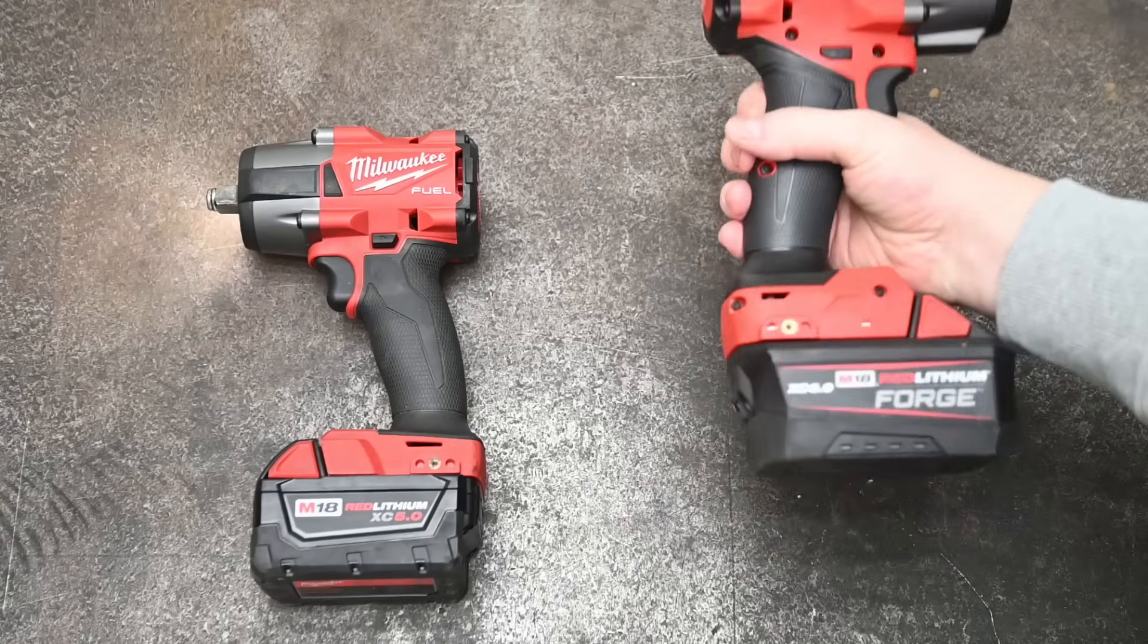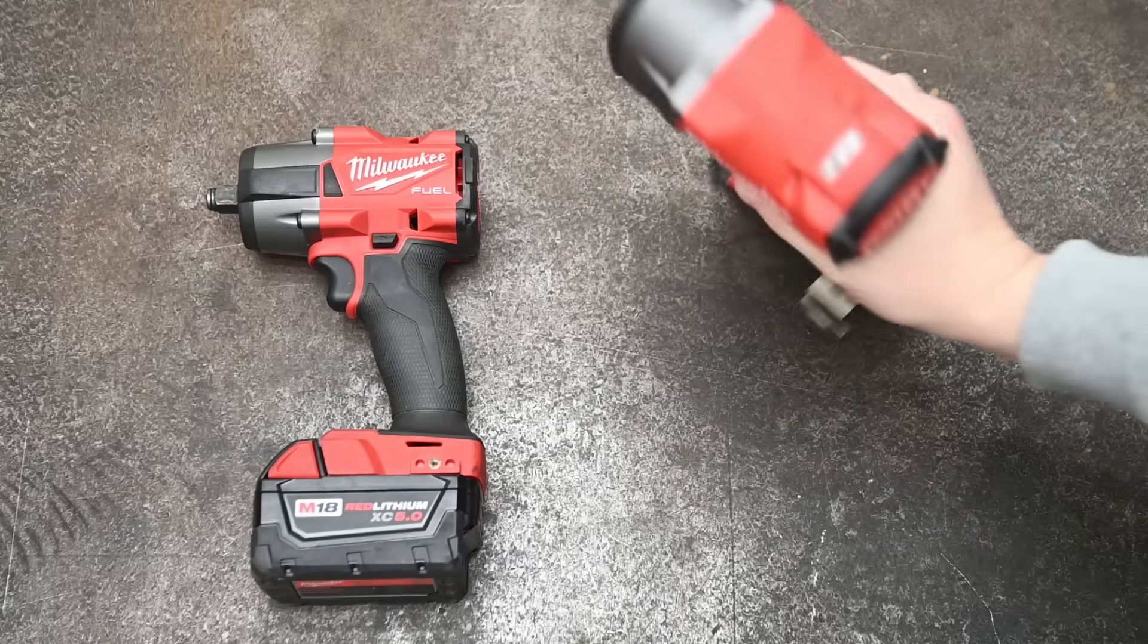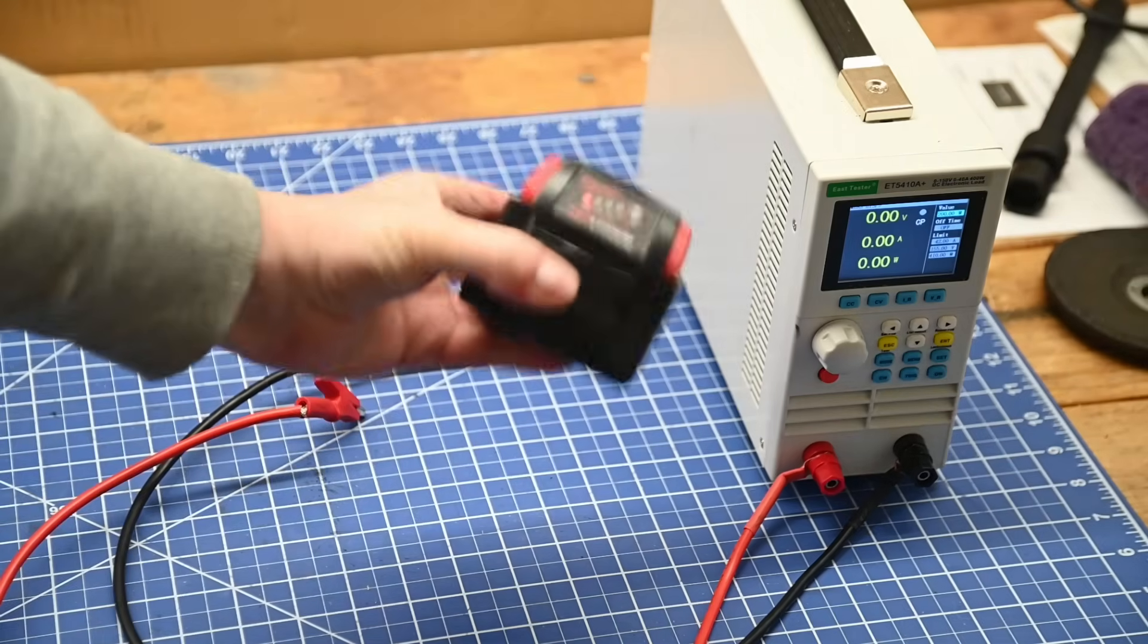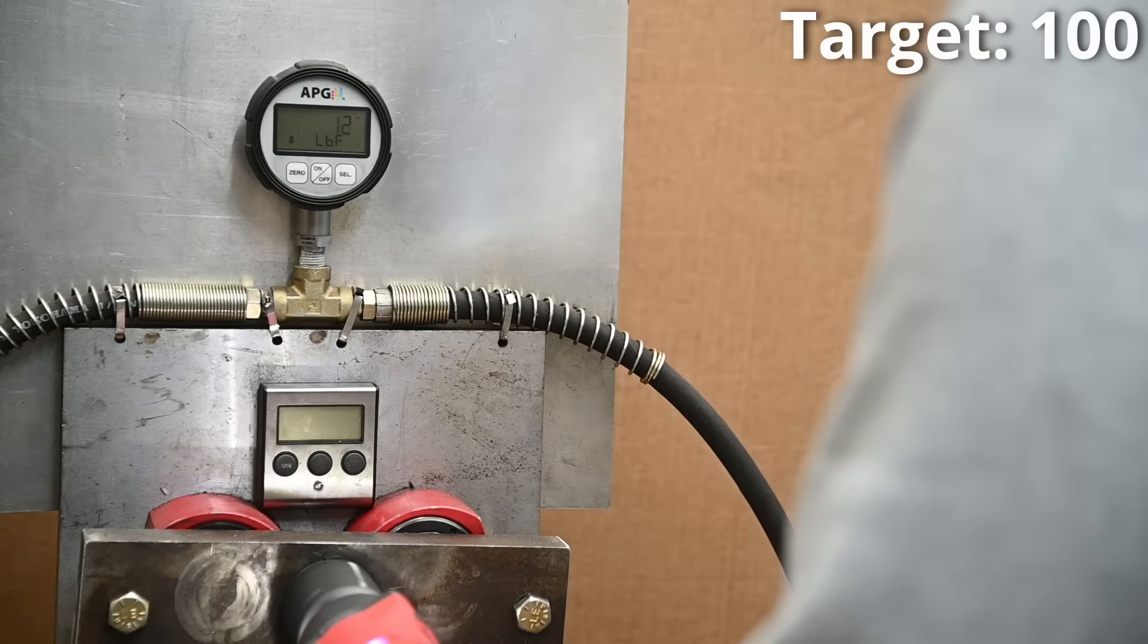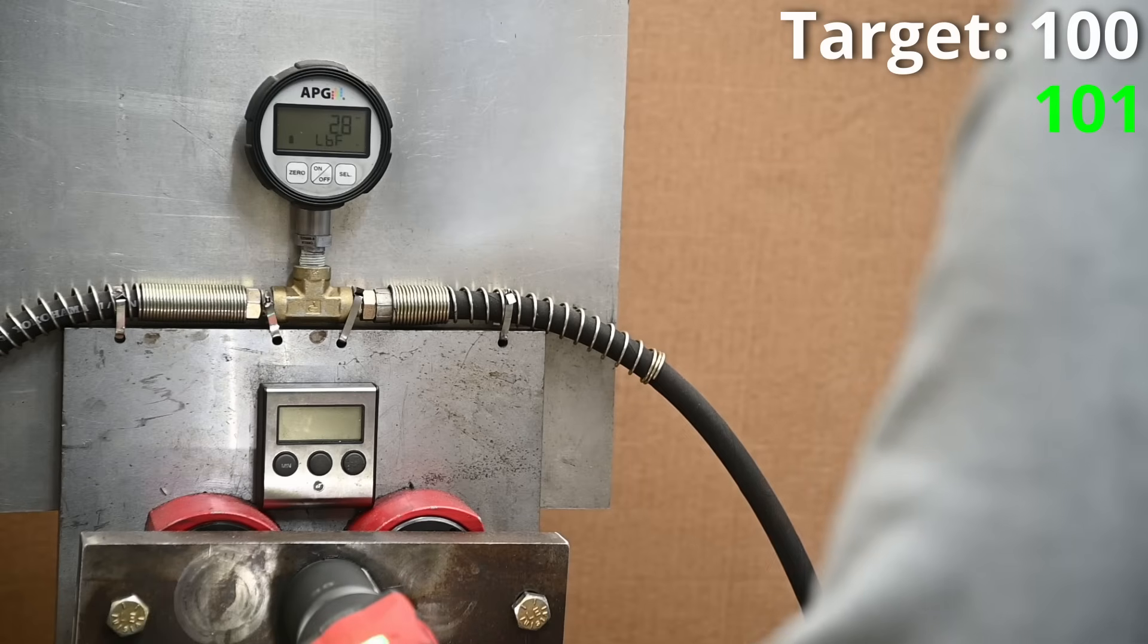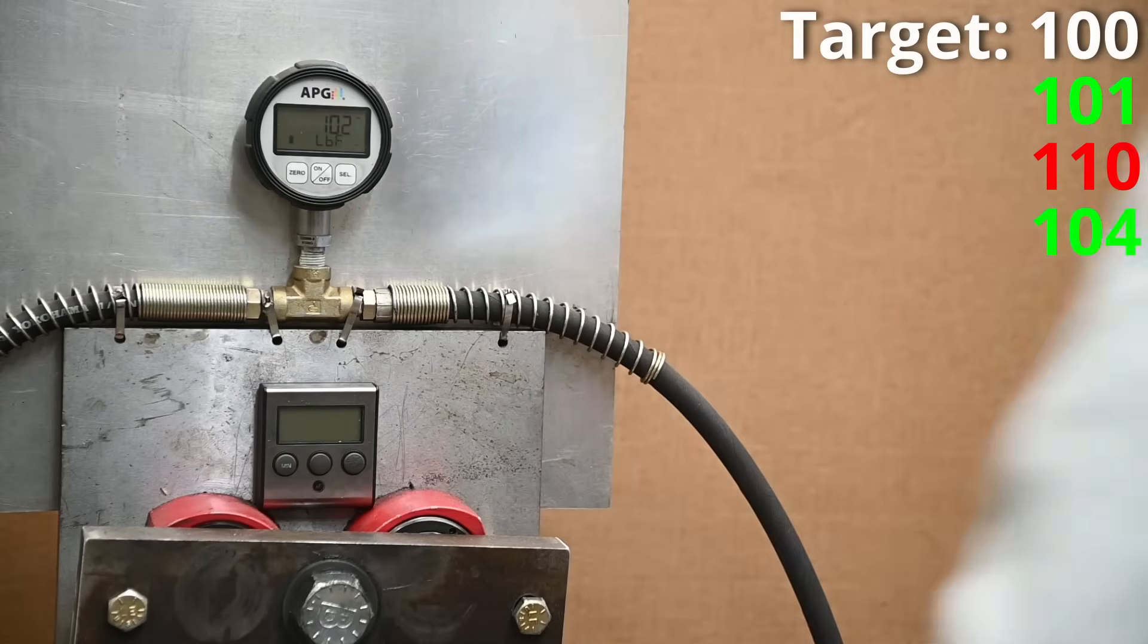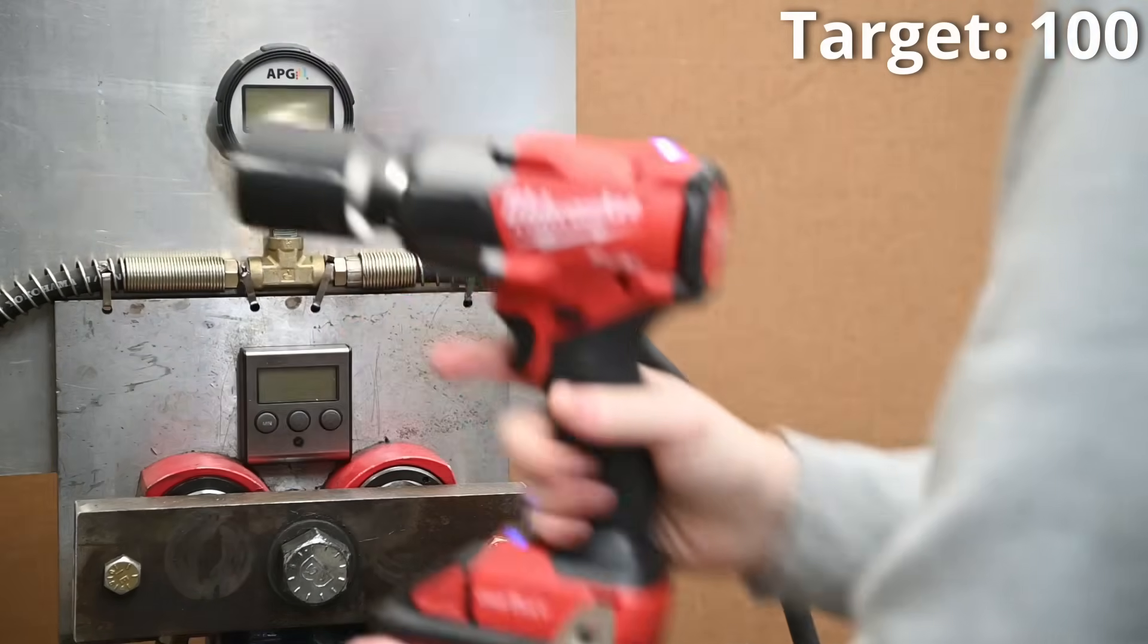Alright, we're giving this new pricey guy too much unearned credit though. Let's throw a laundry list of variables its way and see how it handles them. Let's take this XC 5.0 we were using, drain it down to where it's hot and just one bar of juice left and see how the controlled torque does controlling torque despite just 16 volts being there instead of 19 or 20. 101 foot-pounds. 110. Okay, going the opposite direction as we assumed, but still 104 foot-pounds, not bad.